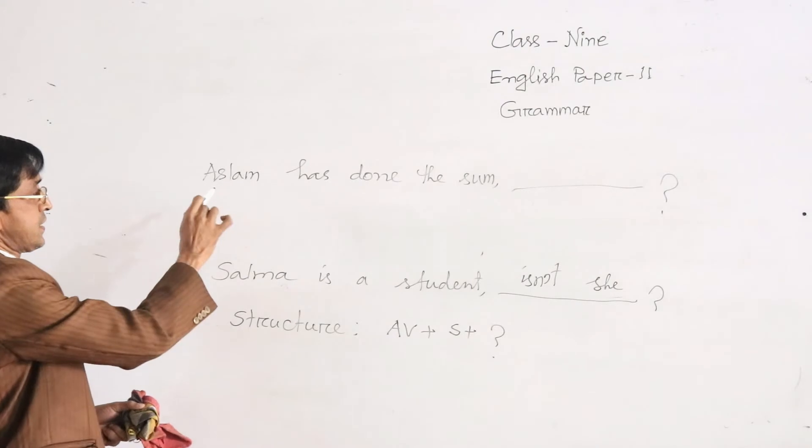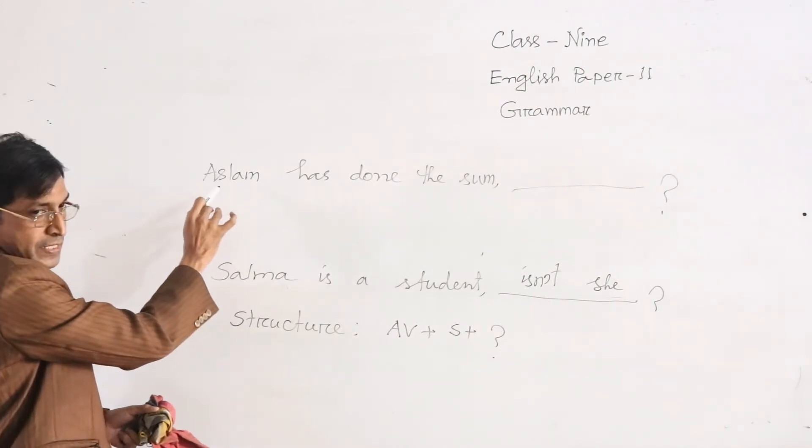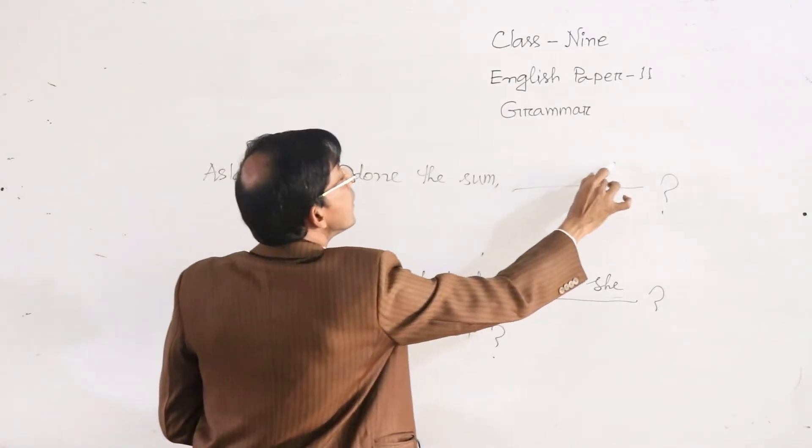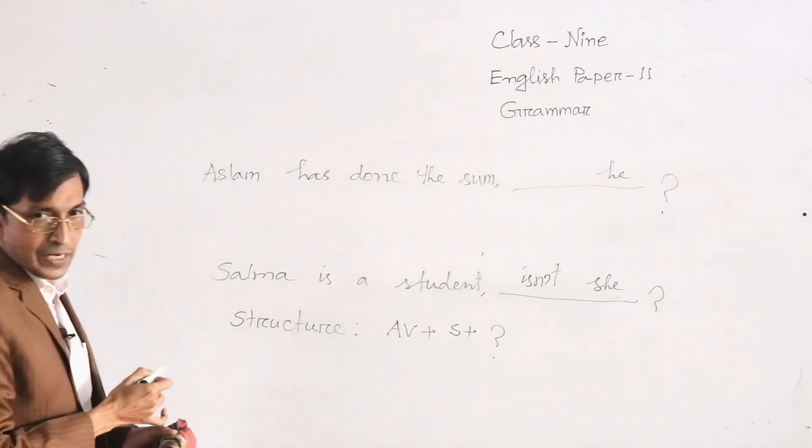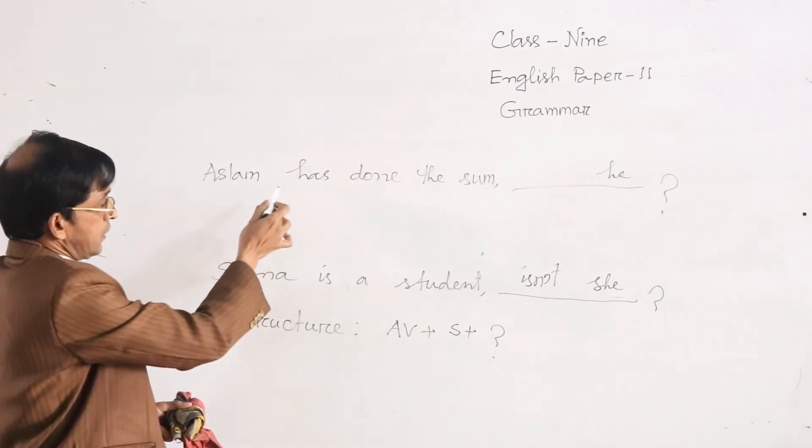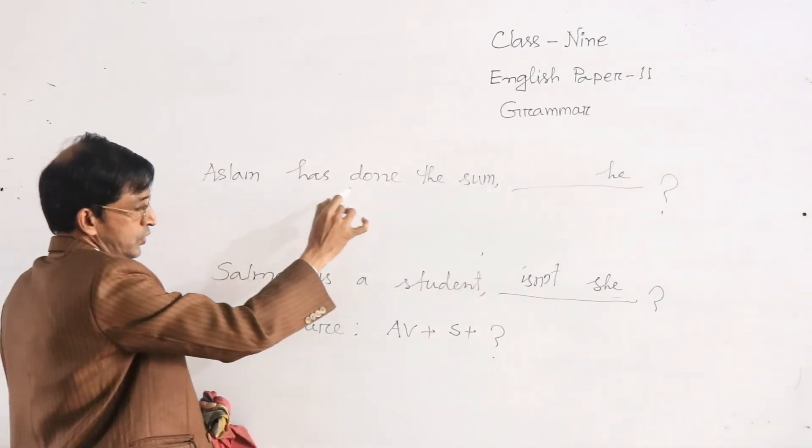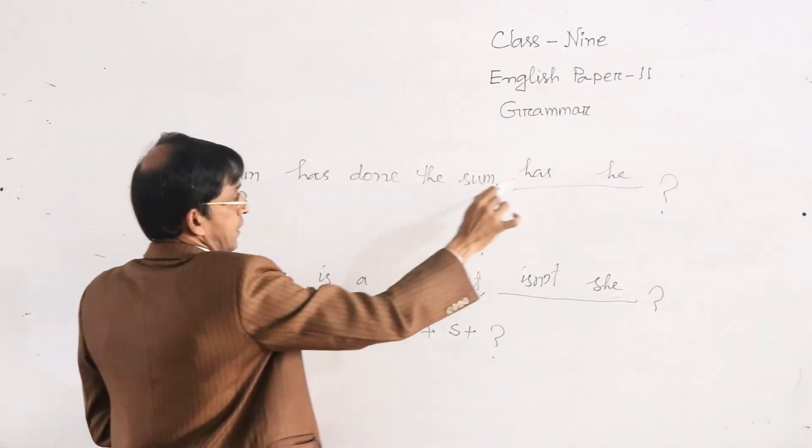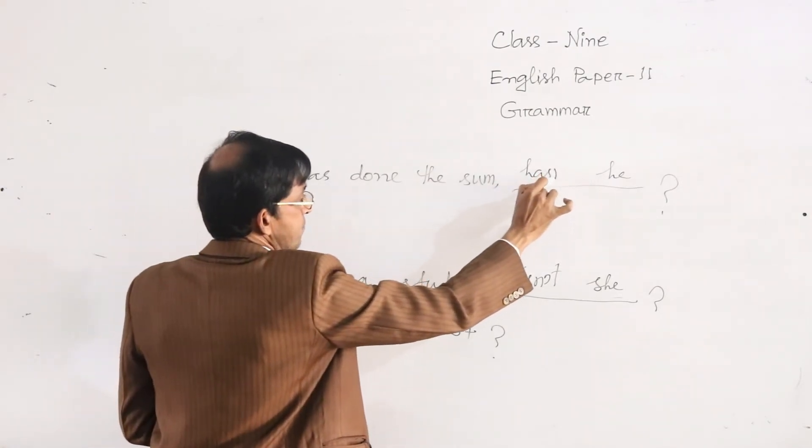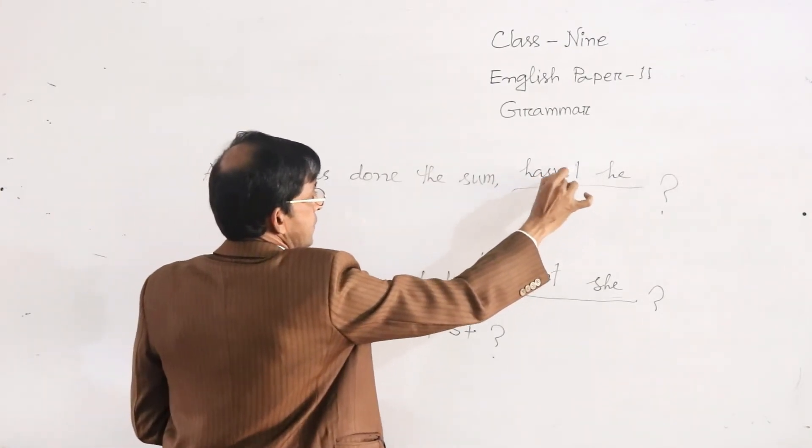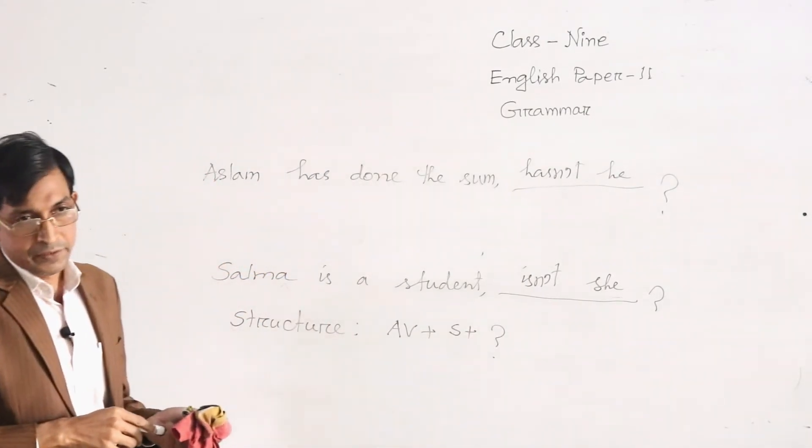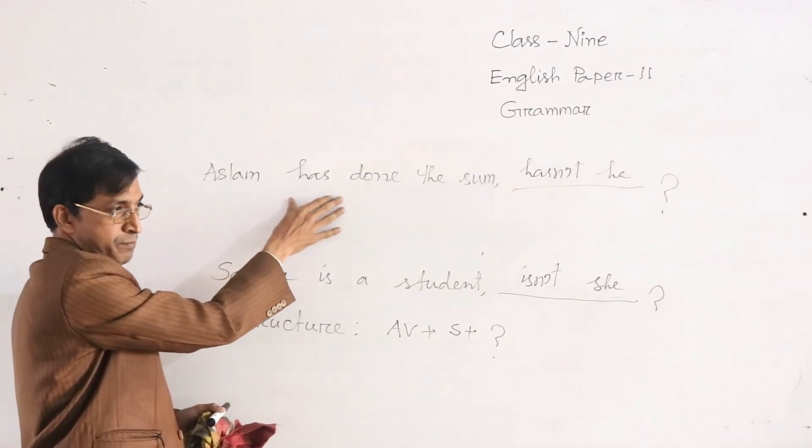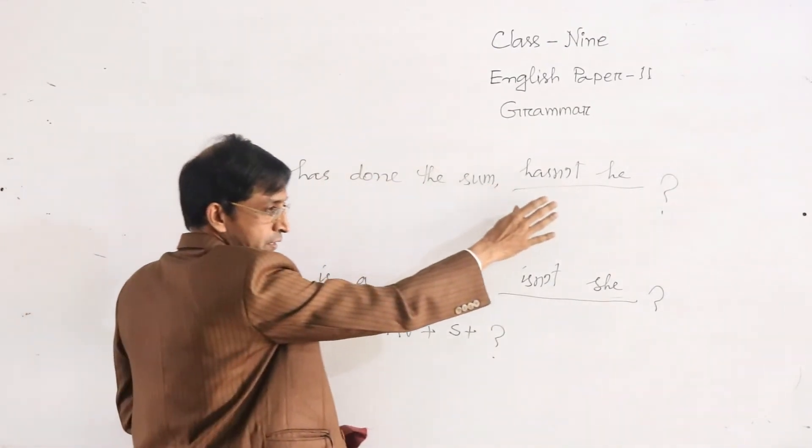We may tag question here. In this sentence subject is Aslam. So we have to use he instead of Aslam, and in this sentence has is auxiliary. So we may use has. To justify it we have to make negative: hasn't he. It should be remembered that if the statement is affirmative, tag will be negative.